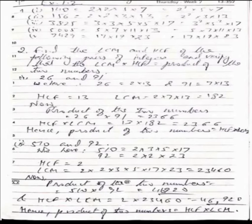Second numbers are 510 and 92. We can see the product of the HCF and LCM. HCF being 2 and LCM is 23460, so the product of HCF and LCM is 46920 and the product of the two numbers 510 and 92 is again 46920.